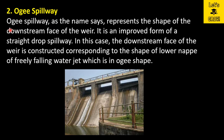The second spillway is the ogee spillway. As the name suggests, it represents the shape of the downstream face of the weir. It is an improved form of a straight drop spillway. In this case, the downstream face of the weir is constructed corresponding to the shape of the lower nappe of a freely falling water jet, which is in ogee shape. Whatever projectile is traced by this freely falling water — that same profile is used in the ogee shape.